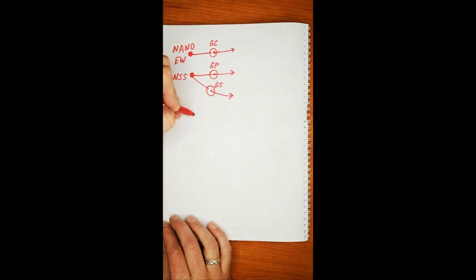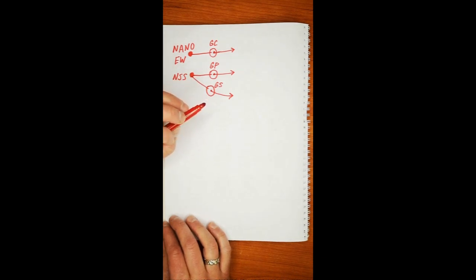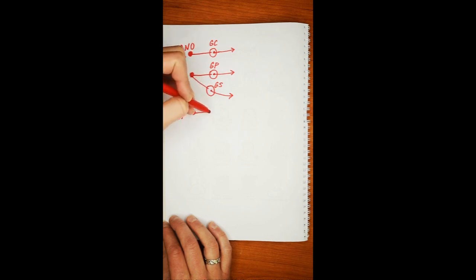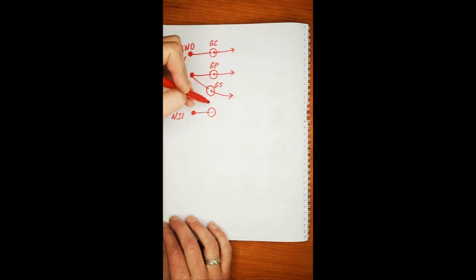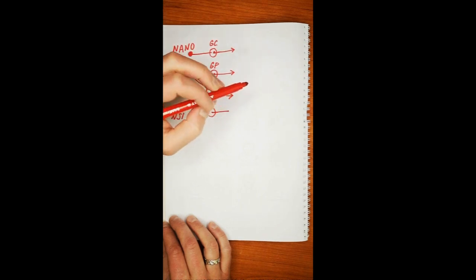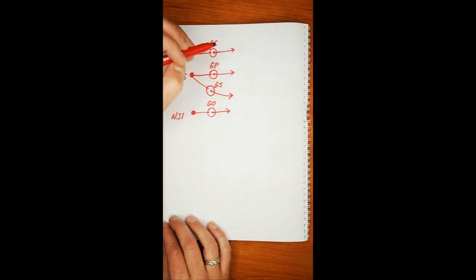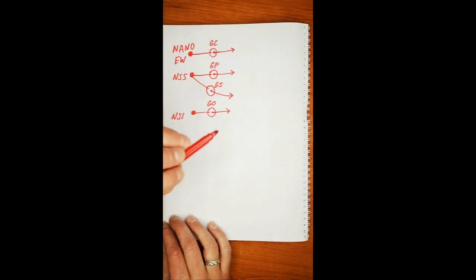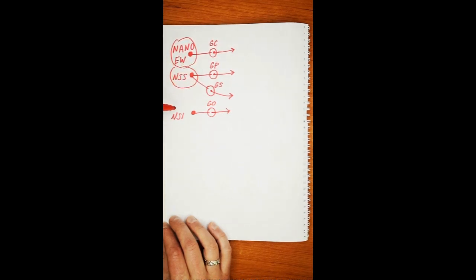The third parasympathetic nucleus we are talking about today is called Nucleus Salivatorius Inferior. This one belongs to cranial nerve 9, Nervus glossopharyngeus. The fibers form the lesser petrosal nerve, which reaches a ganglion called the otic ganglion — ganglion oticum. The fibers from the ganglion oticum join the auriculotemporal nerve and reach the parotid gland. So, all the parasympathetic innervation in the head comes from those three nuclei belonging to cranial nerves 3, 7, and 9, with four destinations.